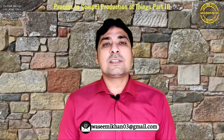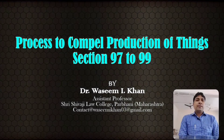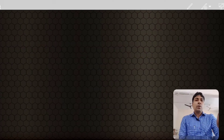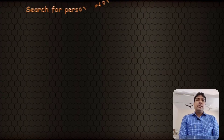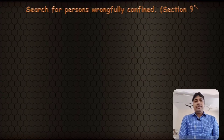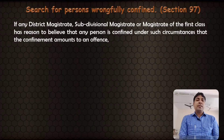Today's point of discussion is Process to Compel Production of Things, 3rd Part, which we will discuss in Section 97 to Section 99. What will be the process of search of any premises? What will be the procedure? What will be the search warrant issued by the Magistrate? Process to Compel Production of Things, Section 97 to 99 of Criminal Procedure Code.